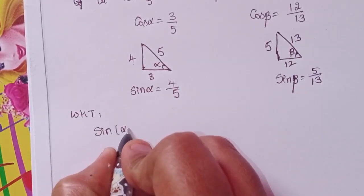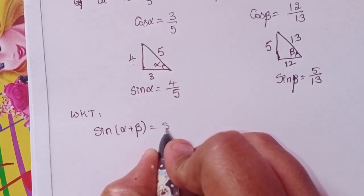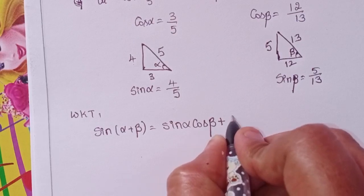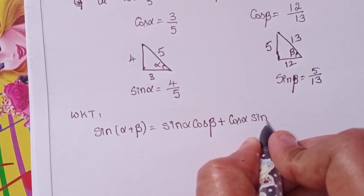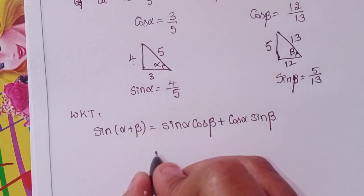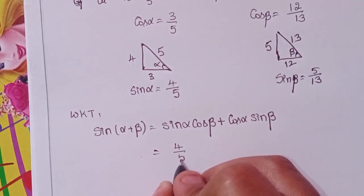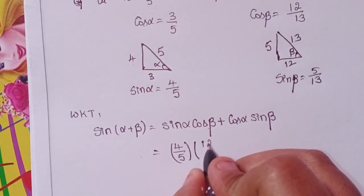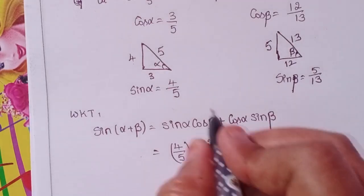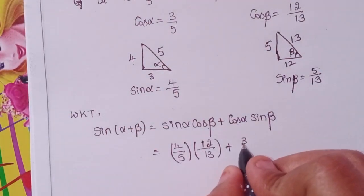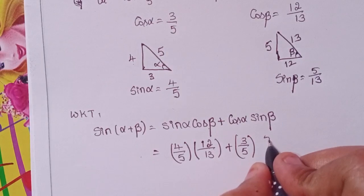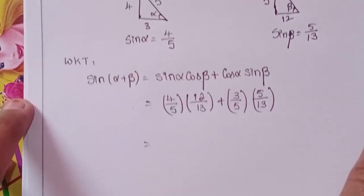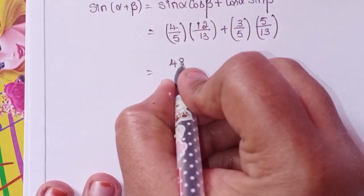We know that sine of alpha plus beta equals sine alpha into cos beta plus cos alpha into sine beta. That means: 4 by 5 into 12 by 13, plus 3 by 5 into 5 by 13.